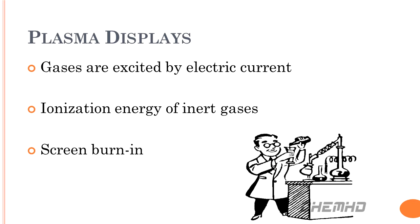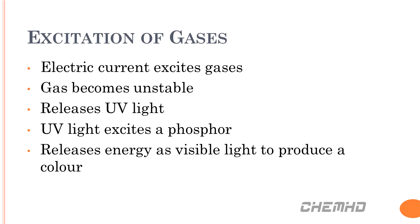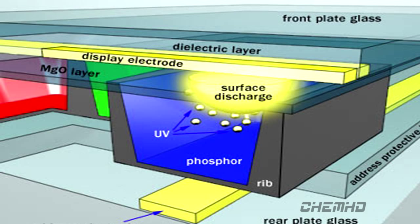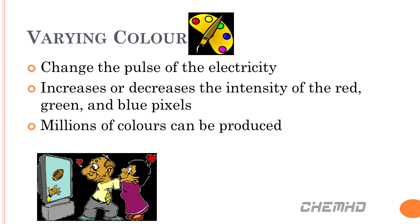Our next three sections will be related to plasma displays. The excitation of gases is directly related to producing light. The electric current excites the inert gases in the chamber. When the gases return to their normal state, they release ultraviolet light. The UV light strikes a phosphor, exciting it. When the phosphor returns to its relaxed state, it releases visible light. The way plasma displays vary color is by changing the pulse of the electricity. Increasing the pulse increases the color intensity, decreasing it lowers the intensity. From this, 256 shades of red, green, and blue can be produced, which in turn creates 16,777,216 different colors.